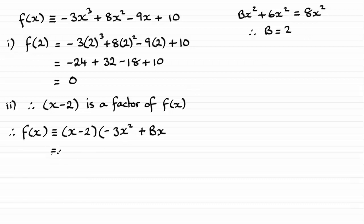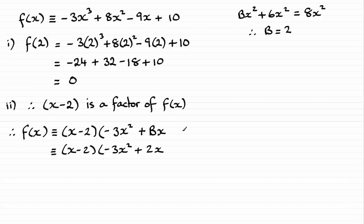So we've got x minus 2 multiplied by minus 3x squared plus 2x so far. For this quadratic factor, there's got to be a constant on the end. The only way you get a constant is when you multiply the minus 2 with the constant you're going to put here. Minus 2 times something has got to give us plus 10, so it's got to be minus 5. Put minus 5 in there, and there we have it — our product of two factors.